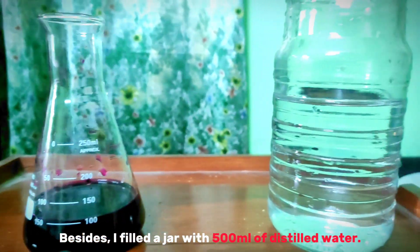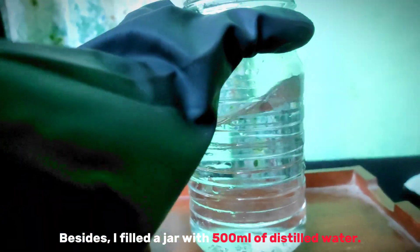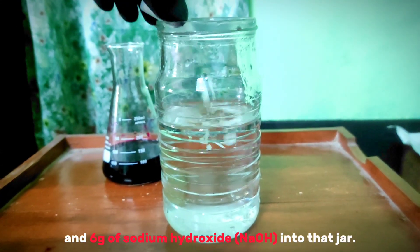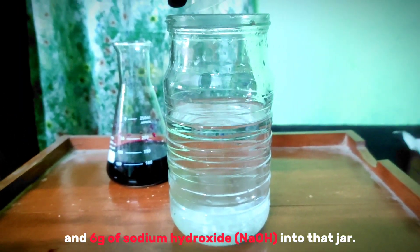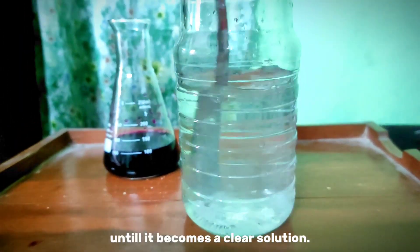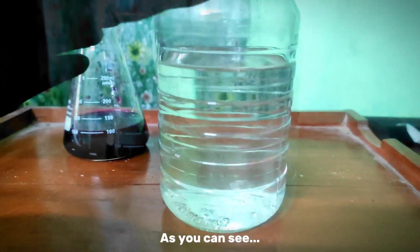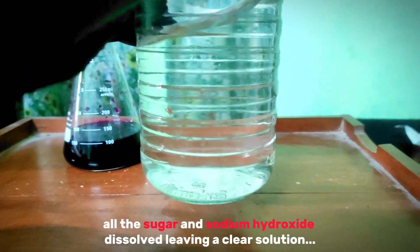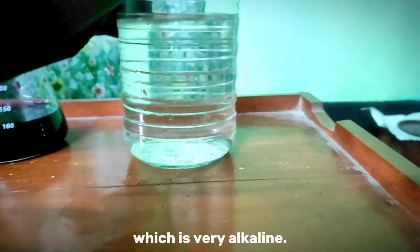Besides, I filled the jar with 500 ml of distilled water. Then I dropped 9 grams of sugar and 6 grams of sodium hydroxide into that jar. I stirred the mixture until it becomes a clear solution. As you can see, all the sugar and sodium hydroxide dissolved, leaving a clear solution which is very alkaline.